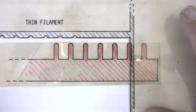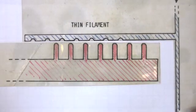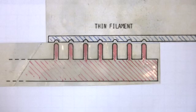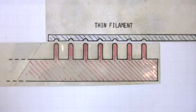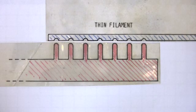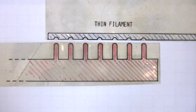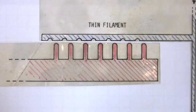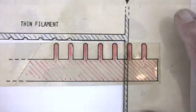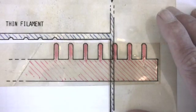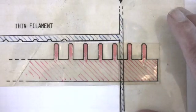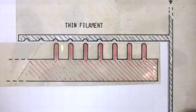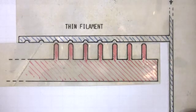Again the heart fills with blood, the thick and thin filaments slide in this direction, and now all seven cross bridges have bound — maximum overlap occurs and maximum force of contraction is generated, seven cross bridges worth of force. So you see, the greater the stretch, the greater the force of contraction. This is Starling's Law.